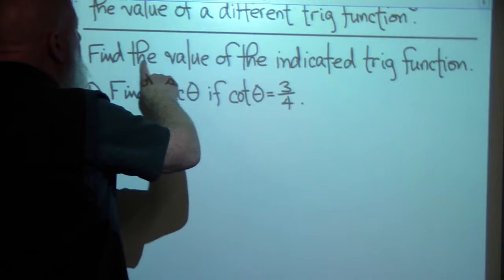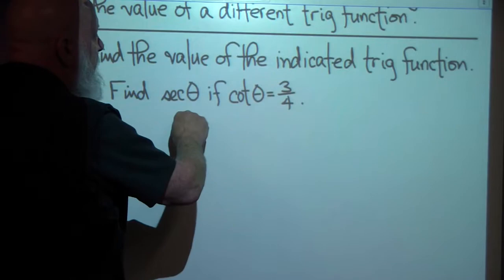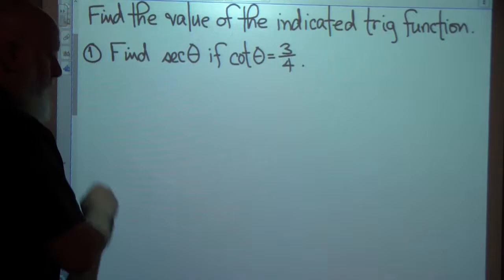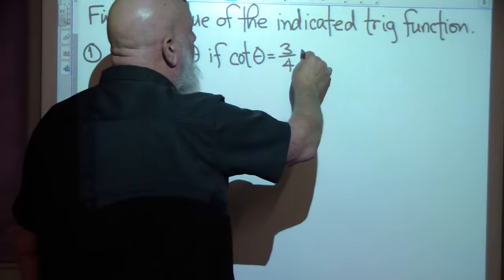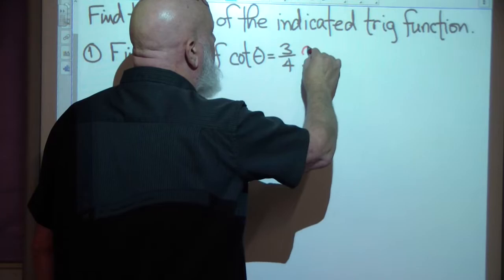Let's take a look at what we're dealing with here. Find the value of an indicated trig function: find the secant of theta — that's what I'm looking for — if the cotangent of theta is 3/4. I'm going to talk my way through how I would do this. If the cotangent is 3/4, well, the tangent is opposite over adjacent, so cotangent is adjacent over opposite.